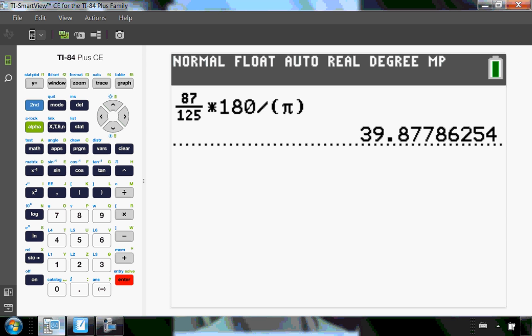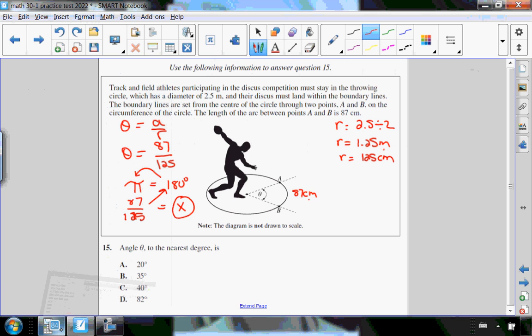So I get 39.87786, etc. And I want it to the nearest degree. So that would be 40 degrees. So the answer to number 15 is C.